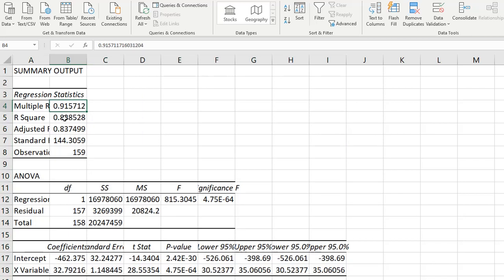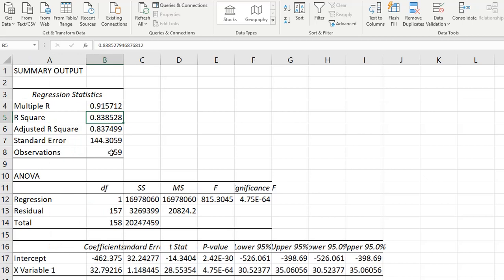And here is the output for the regression statistic and the correlation. So here's our correlation, here's our regression statistic, here's our adjusted, our standard error.